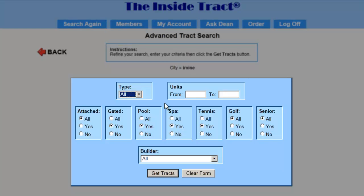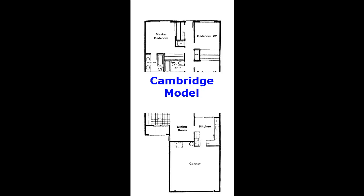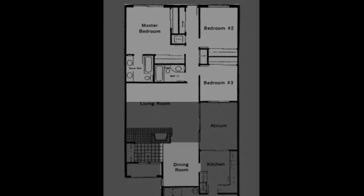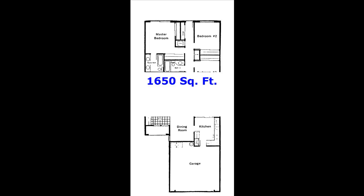Now let's do an advanced model search. In this example, my subject is the Cambridge model in University Park. This is a one-story plan with three bedrooms and a formal dining room. It's approximately 1,650 square feet and it has a two-car garage. I'm going to make a list of all the comparable models in University Park that have these features.